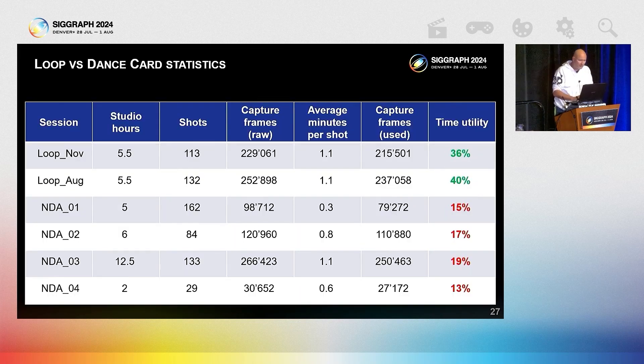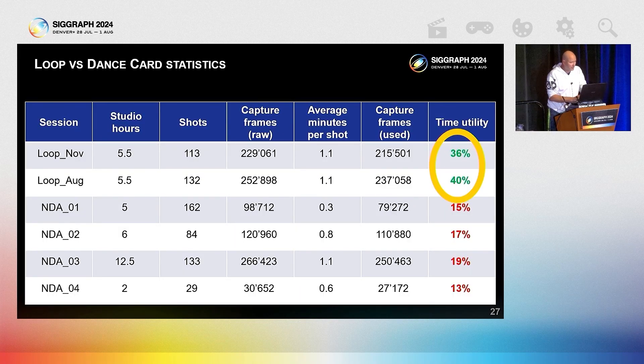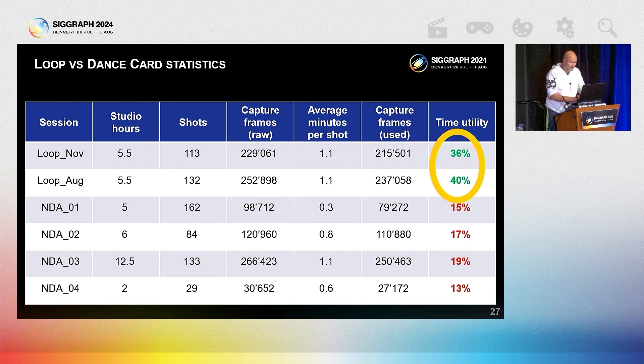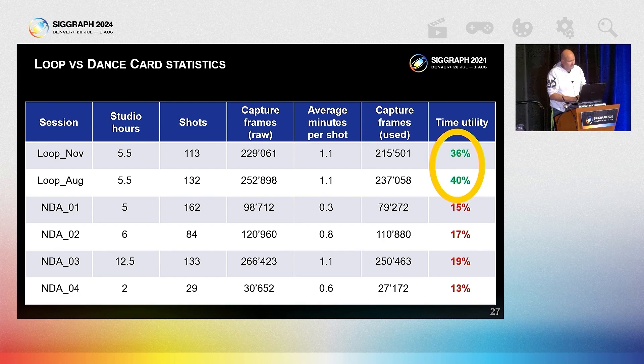Statistics-wise, with loop we double or triple the amount of useful data per unit of time. This means things that usually would take a week can be done in just two days with more utility. Granted, all mocap sessions are different and a completely correct comparison is impossible.